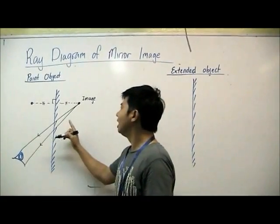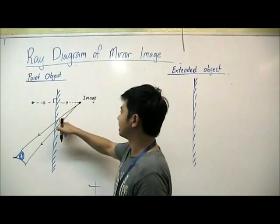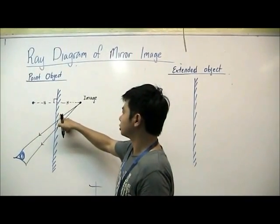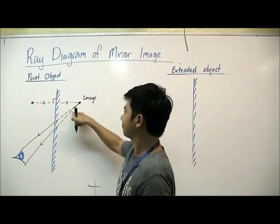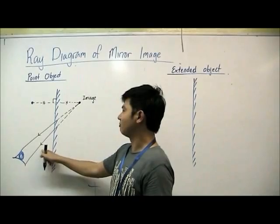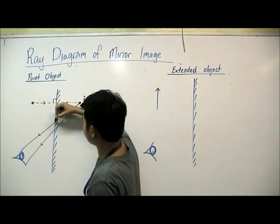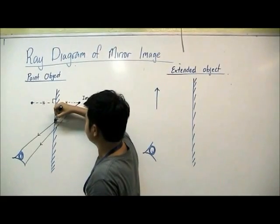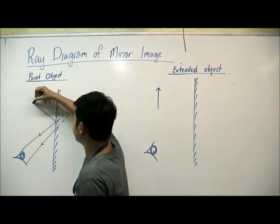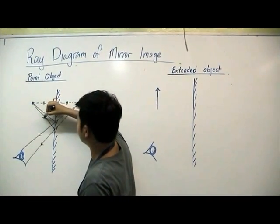Since there is no ray behind the mirror, the ray that is behind the mirror is actually a virtual line. So we draw it. Then lastly, where do these two rays come from? They actually come from the object. So from the mirror, we draw two rays to the object. And we put in the arrow.